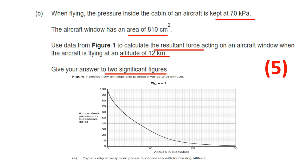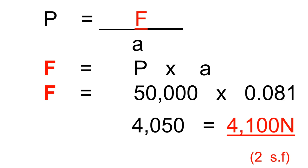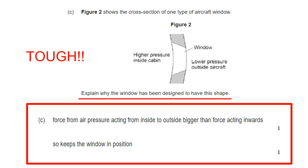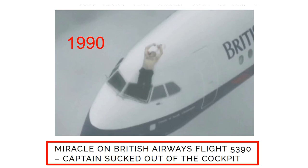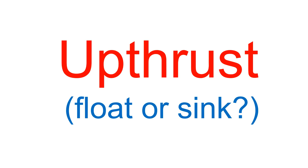Tough exam question on aeroplane windows: cabin pressure is 70 kPa; reading the graph for 12 km altitude gives outside pressure of 20 kPa. The pressure difference is 50 kPa = 50,000 Pa. Aeroplane windows are designed to curve inward because the inside pressure is greater than outside, keeping the window held in position. In 1990 a window failed and a pilot was sucked out — but survived when held by his legs.